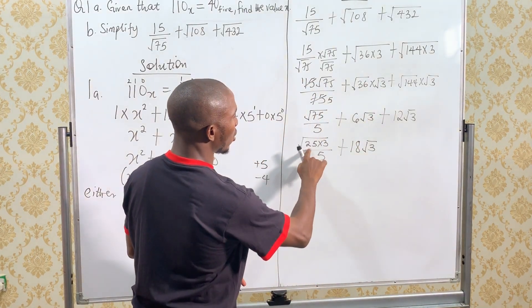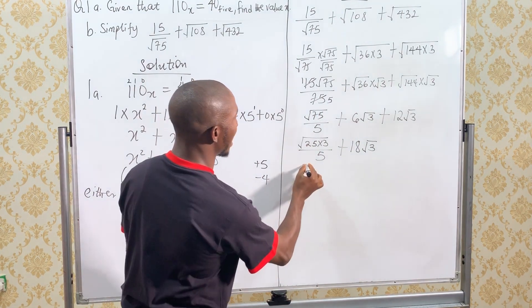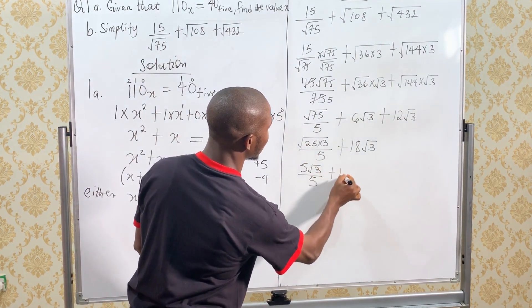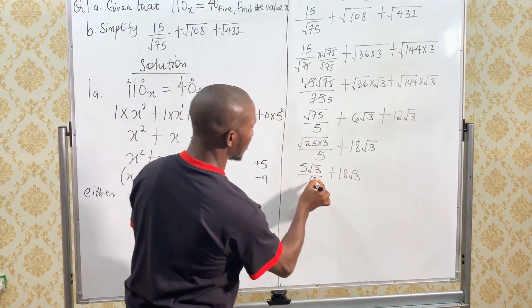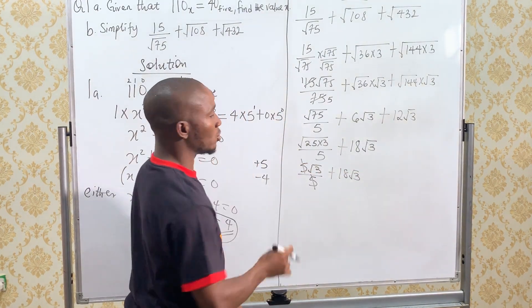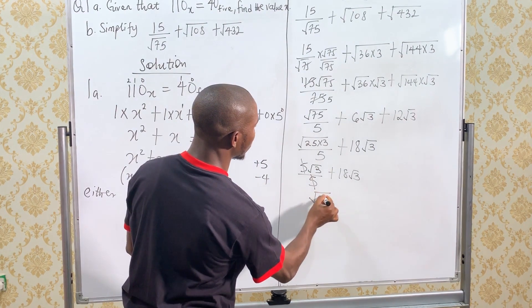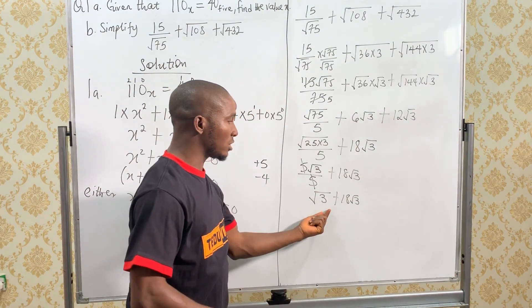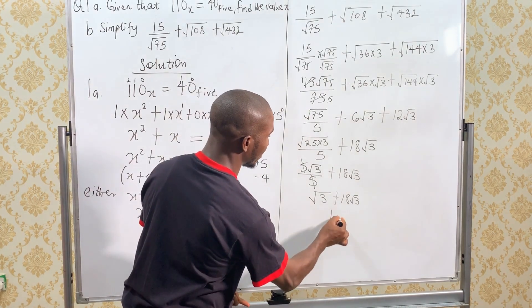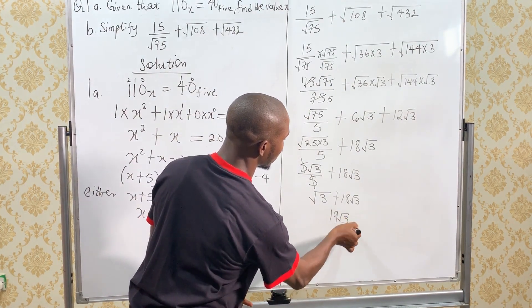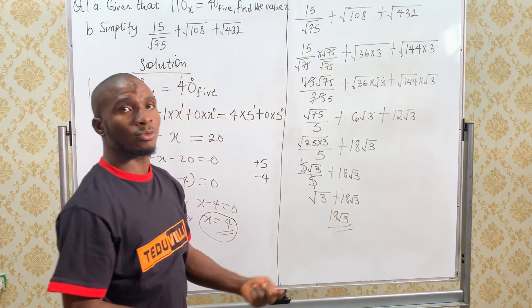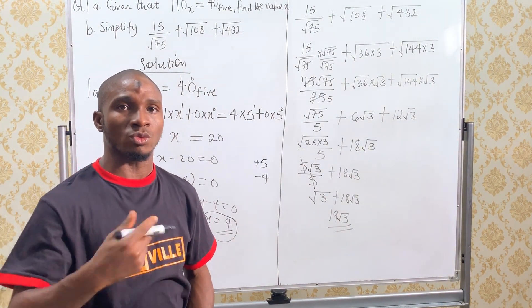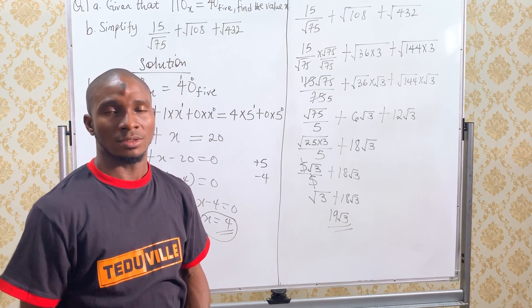The square root of 25 is 5 so we have 5 root 3 over 5 plus 18 root 3. 5 we cancel 5 so we are left with root 3 so we now have root 3 plus 18 root 3. Root 3 plus root 3 becomes 19 root 3 and this is the end of question 1 of part 1. In our next video we are going to continue with question 2 of part 1. Thank you.